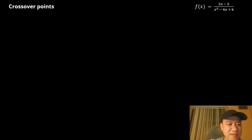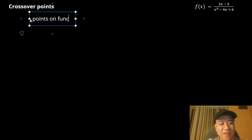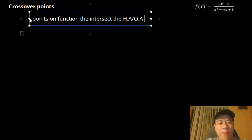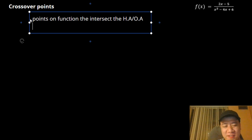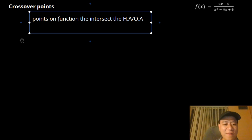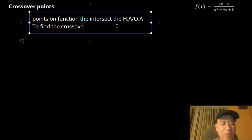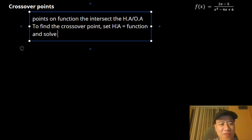So let's write this down. Crossover points are points on a function that intersect the horizontal asymptote (HA) or oblique asymptote (OA). To find them: since the crossover point is just the intersection of your rational function with the HA or OA, you set the two functions equal to each other and solve.